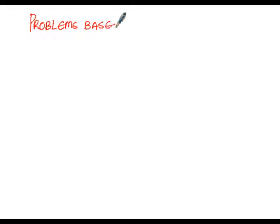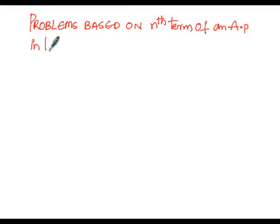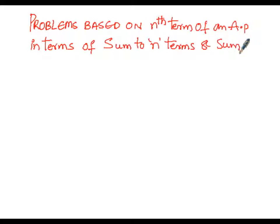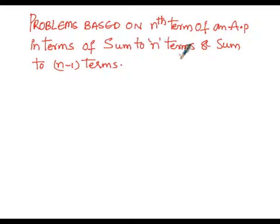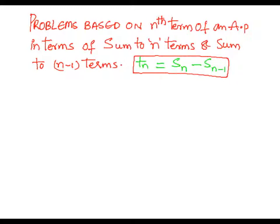We are going to discuss problems based on the nth term of an arithmetic progression in terms of sum to n terms and sum to n minus 1 terms. The nth term is given by t(n) = S(n) - S(n-1). We are going to deal with problems based upon this formula at an advanced level.